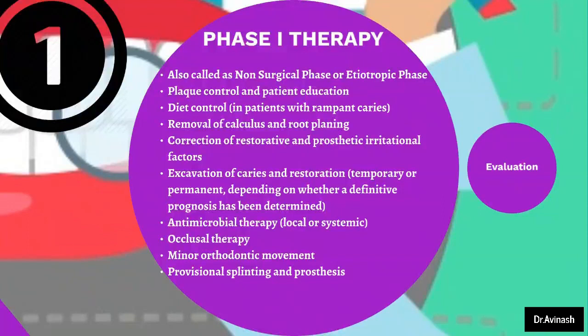Phase 1 also includes removal of calculus and root planing, and correction of restorative and prosthetic irritational factors — that is, if there are any overhanging restorations or if a prosthesis is impinging on the gingiva or other tissues, that has to be corrected. Excavation of caries and restoration is also performed — it can be temporary or permanent depending on whether a definitive prognosis has been determined. If the decay is initial, we go ahead with permanent restoration; whereas if the decay is very deep and close to the pulp, we may do a temporary restoration and wait for the tooth to respond.